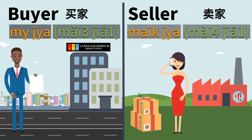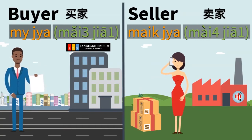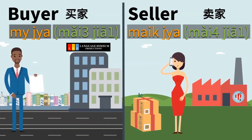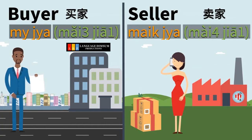An easy way to remember the difference is: when you are buying, your tone is hesitating — you don't know if you want to buy it or not. But when you want to sell it, it is affirmative. You are pushing it, commanding it. You want to sell this item.